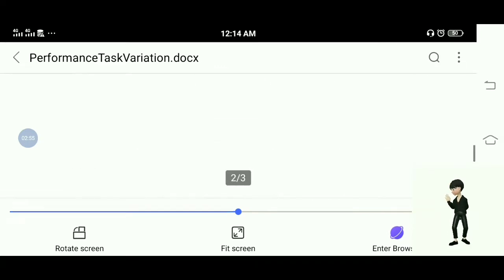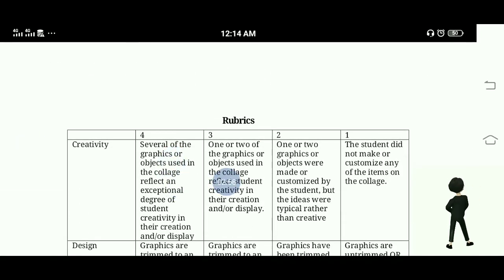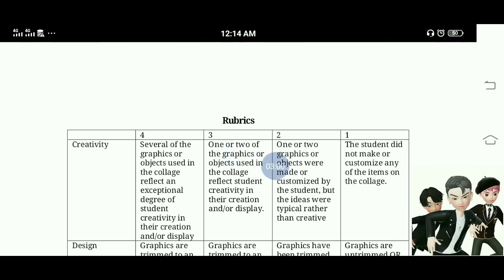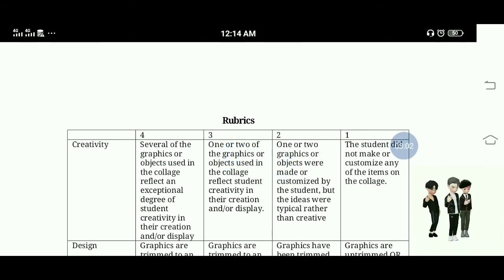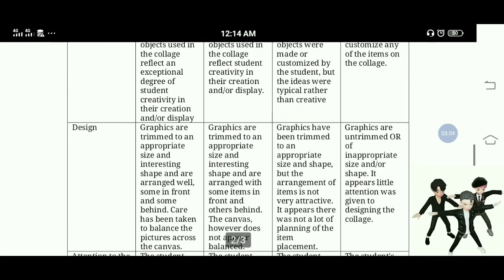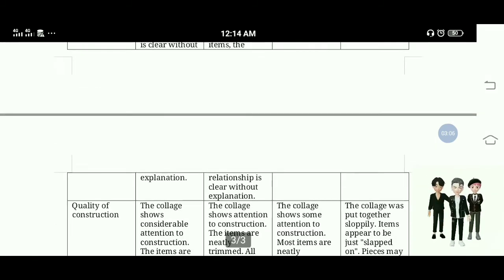And the highest score is four. Then next is three, two, and then one. So the perfect score will get sixteen out of sixteen.